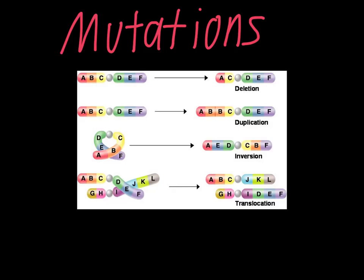There are generally four major categories for mutations. Just before we get to that, I want to talk about the base chromosome here. It shows there are different sections on the chromosome, and those different sections are coding for different genes. So you can see this is what it's supposed to look like.